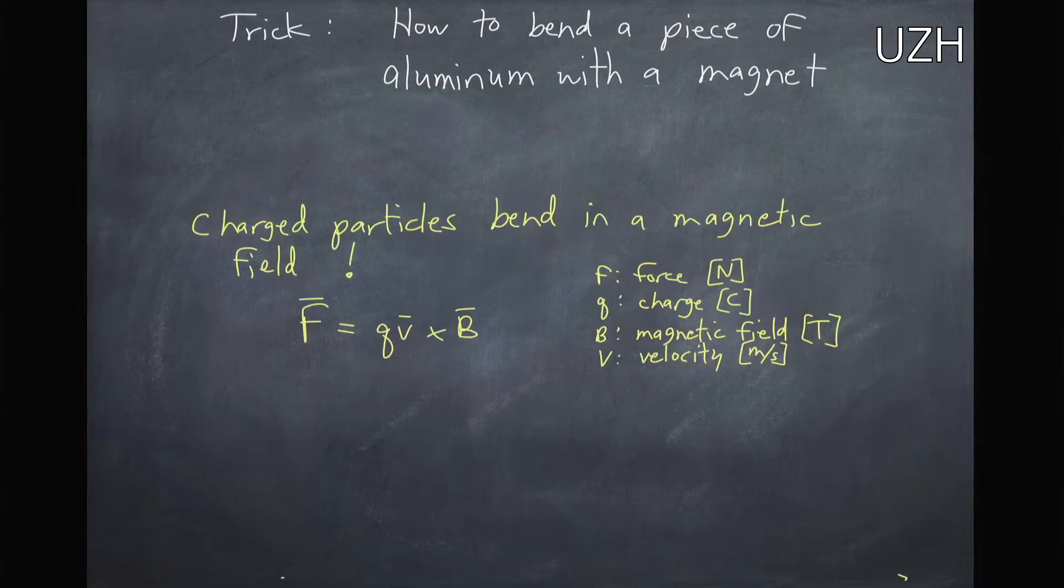So charged particles we know bend in a magnetic field. There's a force on them due to the velocity of the charged particles in a direction that's perpendicular to the magnetic field, and that generates this force which is perpendicular to both of these.